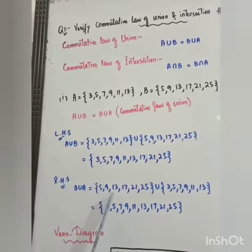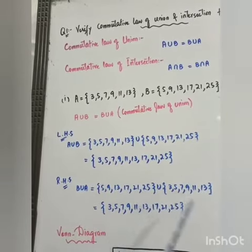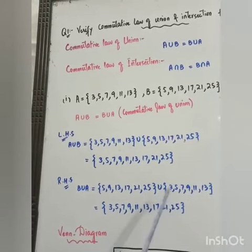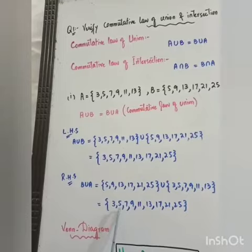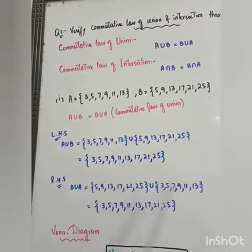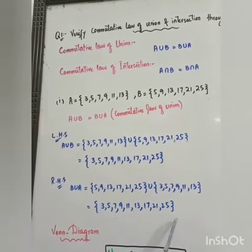Now right hand side, B union A. According to mathematical order, 3 comes first, then 5 appeared in both so write once. Then 7, then 9. Common and non-common all written once.